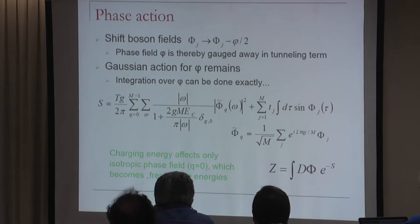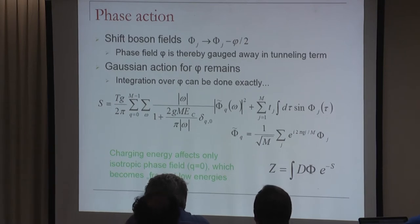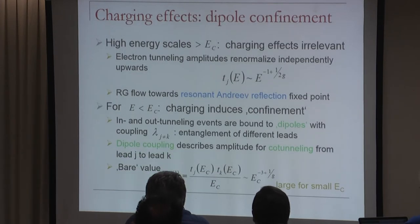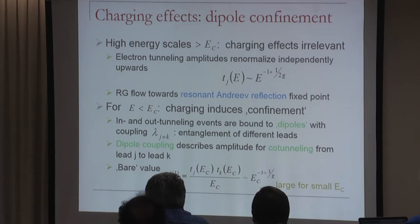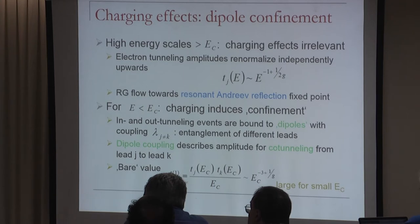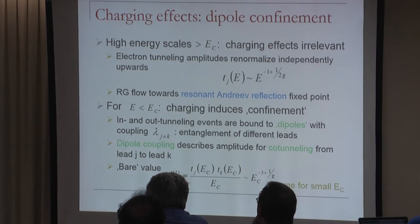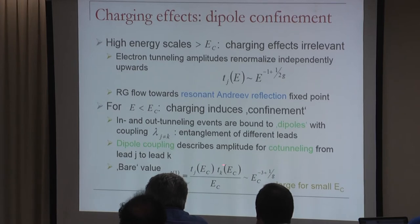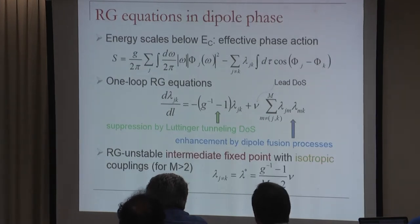On energy scales above E_C, one can forget the charging energy and it's resonant Andreev reflection physics. Below E_C, charging effects kick in and bind in and out tunneling together. The relevant amplitude for such dipole processes is t_j t_k / E_C. At low energy scales below the charging energy, we have a dissipative action with something that looks like a periodic potential.